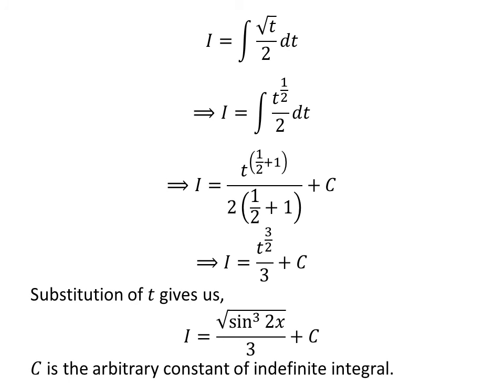Let us substitute t back in terms of x. As we had assumed t is equal to sine of 2x, so i is equal to the square root of the cube of sine of 2x, divided by 3, plus capital C.